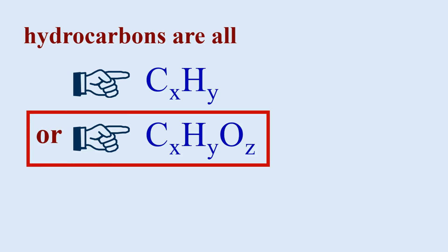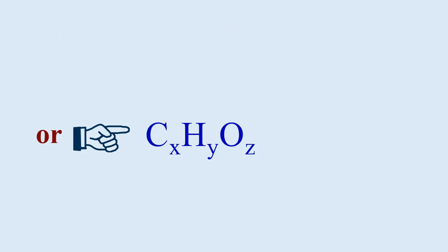That second type of hydrocarbon you need to be able to identify is just CxHy that has been oxidized to some degree, in other words, has oxygen in the formula, so that its general formula is CxHyOz, such as formaldehyde CH2O or ethyl alcohol.